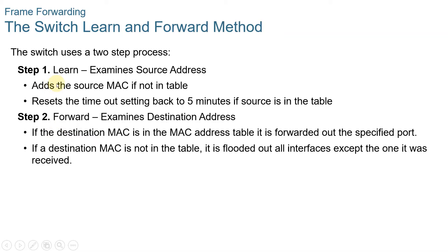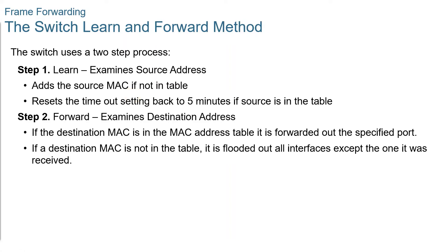Let's talk about the switch learn and forwarding method. The following two-step process is performed on every Ethernet frame that enters the switch: Step 1 — Learn, and Step 2 — Forward. Step 1 examines the source MAC address. Every frame that enters the switch is checked for new information to learn by examining the source MAC address and the port number where the frame enters. If the source MAC address does not exist in the MAC address table, the MAC address and the incoming port number are added to the table.